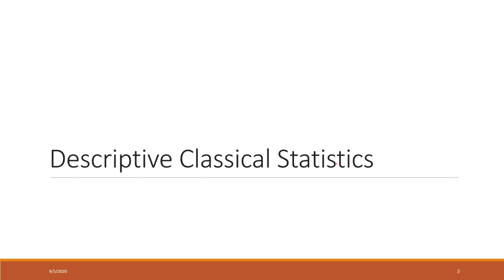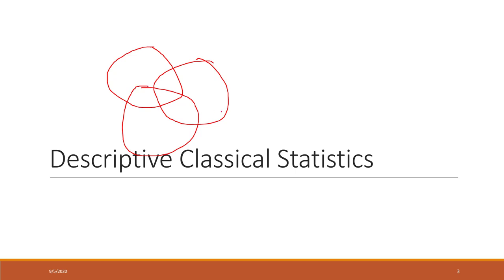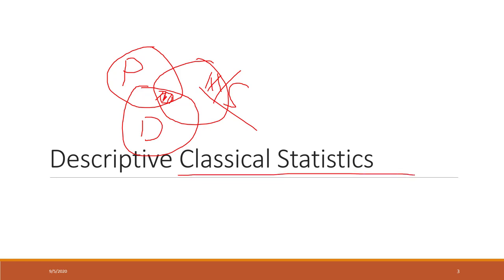Let's review some classical statistics, especially descriptive and classical statistics. Remember the three parts of machine learning: mathematics and statistics is a very important part, along with the ability to do programming or use computers, and also your domain knowledge. All three together are very important to be a good data scientist. So let's review some basic statistics.